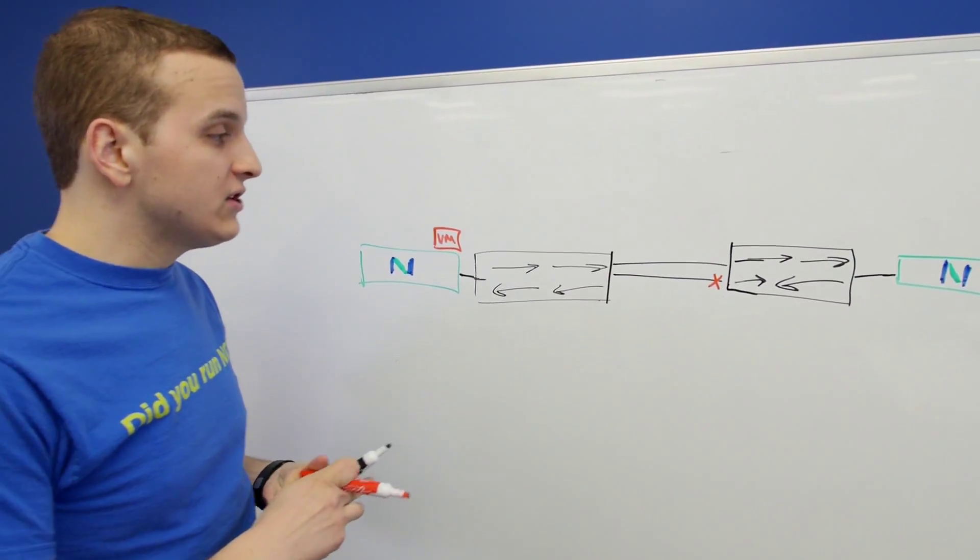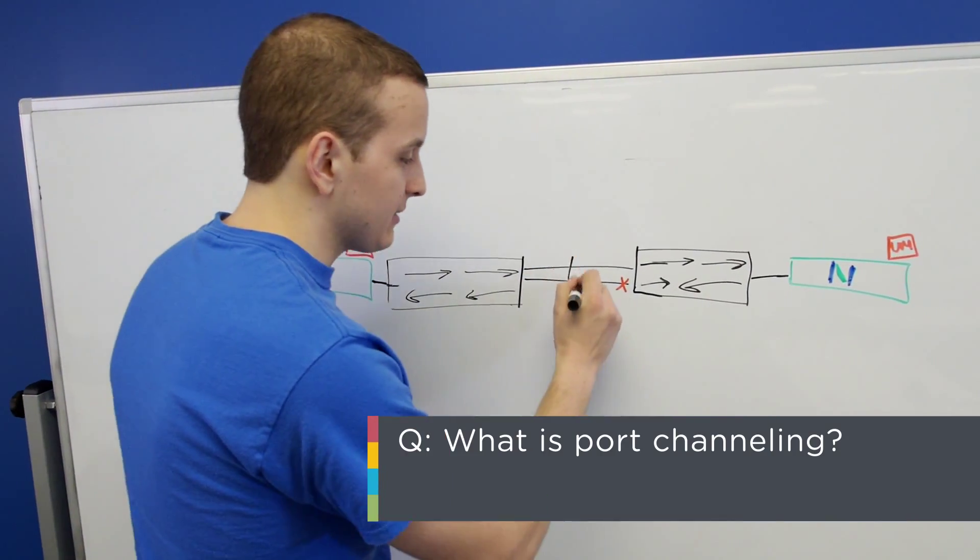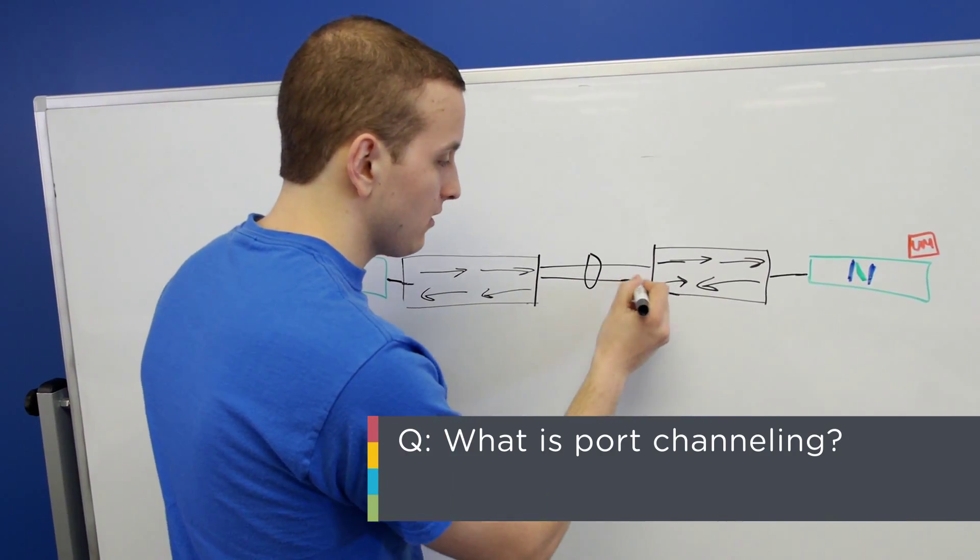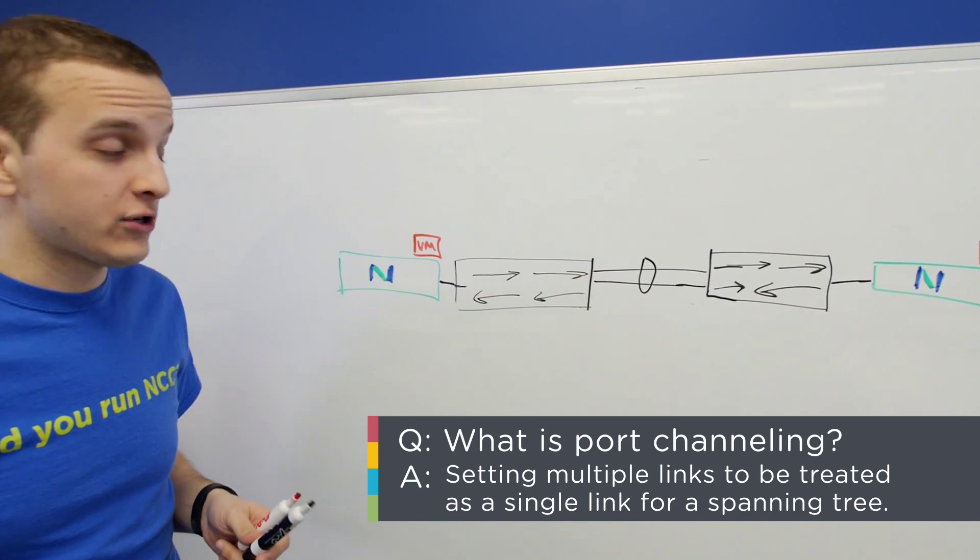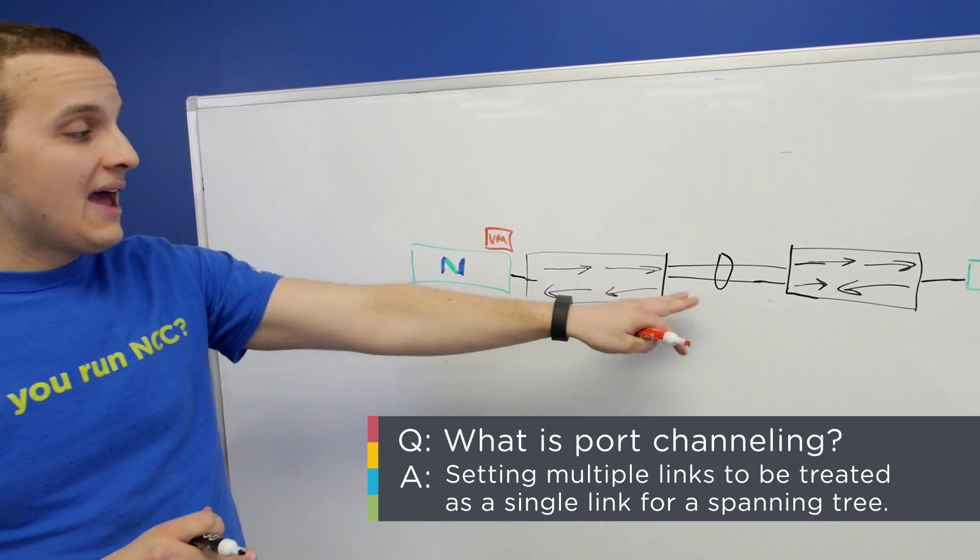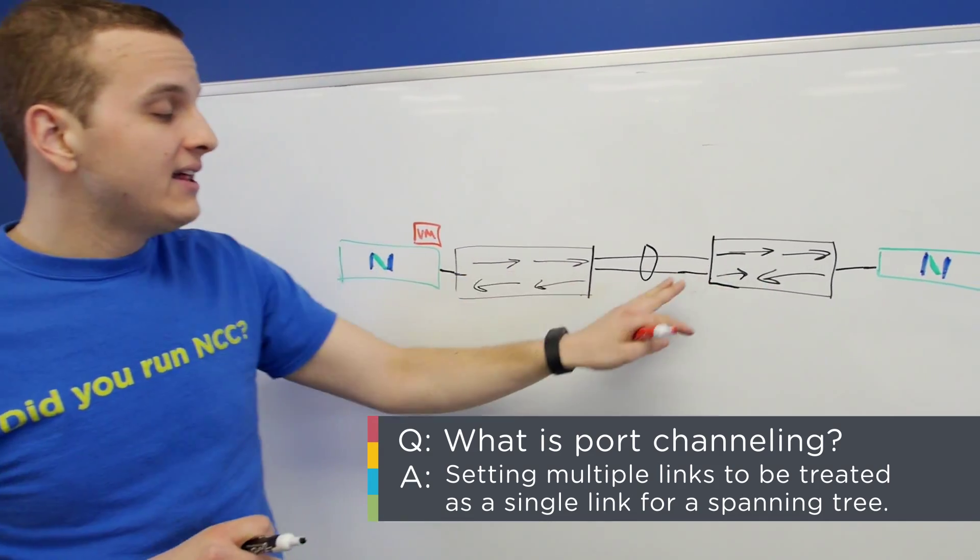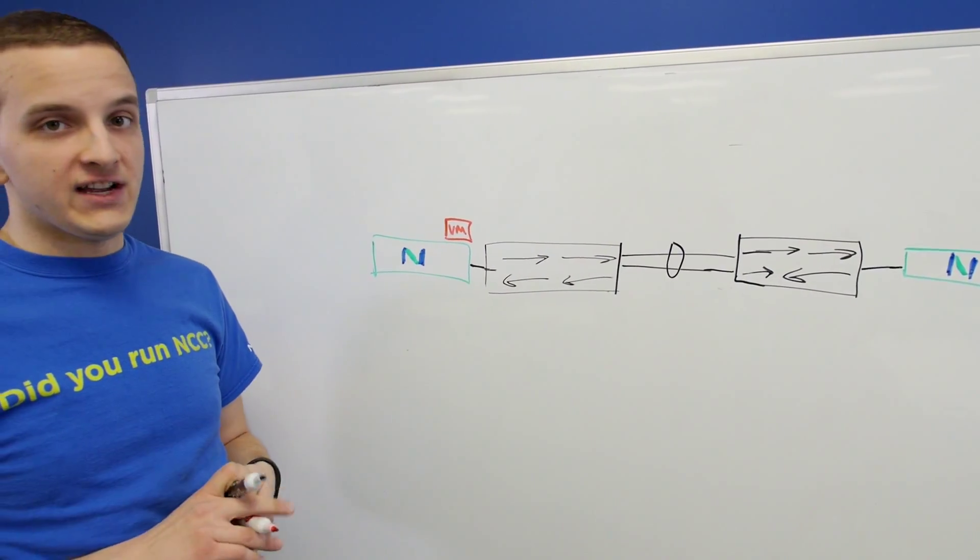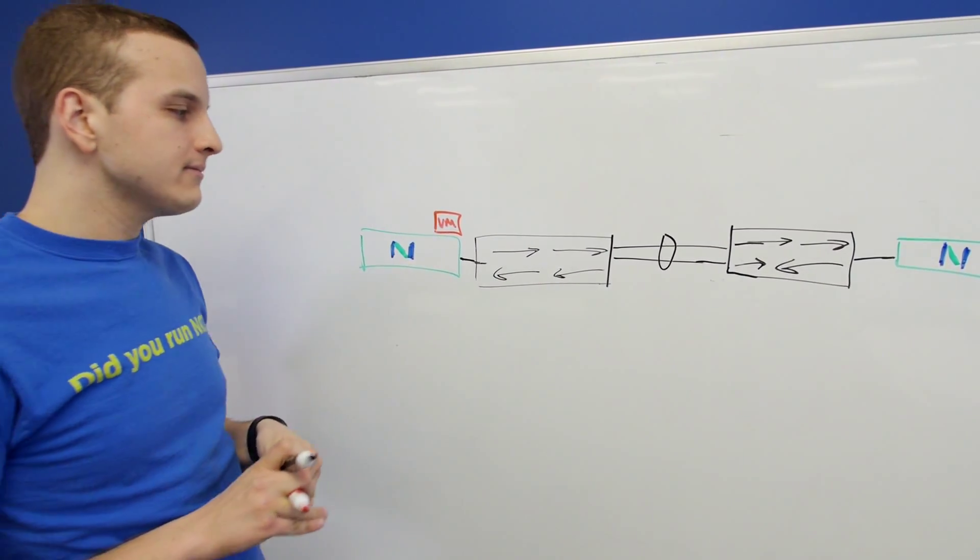Rather than doing that, you can put them both in a port channel, and I'm sure many of you, if not all of you, are currently using port channels in your environment. That tells a switch to treat this interface as a single logical interface for Spanning Tree.